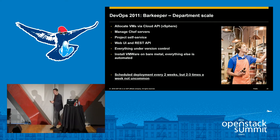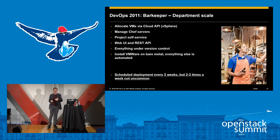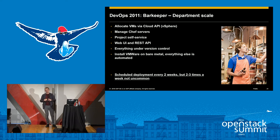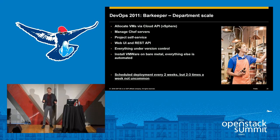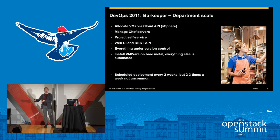We kept improving, and the next year we produced a tool called Barkeeper. Instead of a command line tool, we now had a web interface, and instead of a pool of virtual machines we were talking directly to the vSphere API. Critically, we were running this not just for one team but expanding across the whole department, over multiple teams and multiple projects. We introduced the concept of project self-service: this web-based interface allowed someone to create a new project, define a landscape, set up automation, and have their own version of the ID service or whatever project they're working on. The DevOps platform started to scale throughout the department.